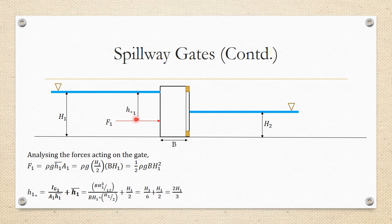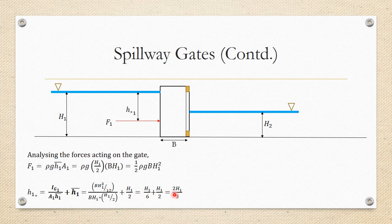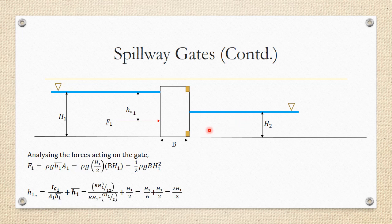H1* can be determined using the formula: H1* = IG/(A1·H̄1) + H̄1, where IG1 = bH1³/12 for a rectangle. Substituting: A1 = b·H1 and H̄1 = H1/2, we get H1* = 2H1/3. So the upstream water column of height H1 exerts pressure force F1 = ½ρgbH1² acting at distance H1* = 2H1/3 from the free surface.